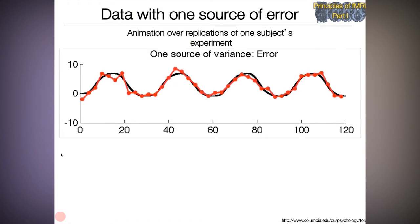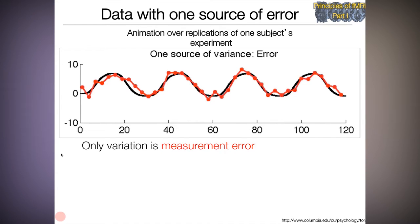So now let's look at a sample fMRI time series with one source of error. And this is an animation over replication of one subject's experiment where the only thing that's varying is the fMRI noise. So what we see here is a fixed population effect, and that's the black line. That's this block on-off. And then every time we sample the actual fMRI data, we get the red line, the black line plus error.